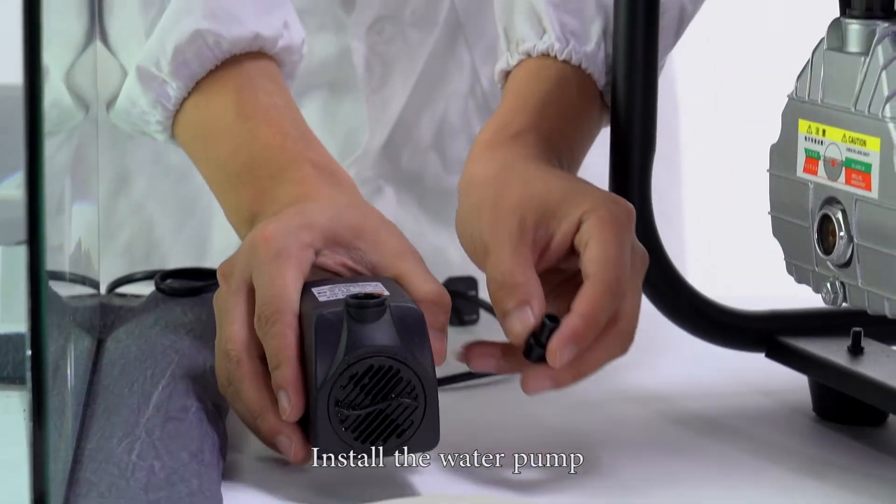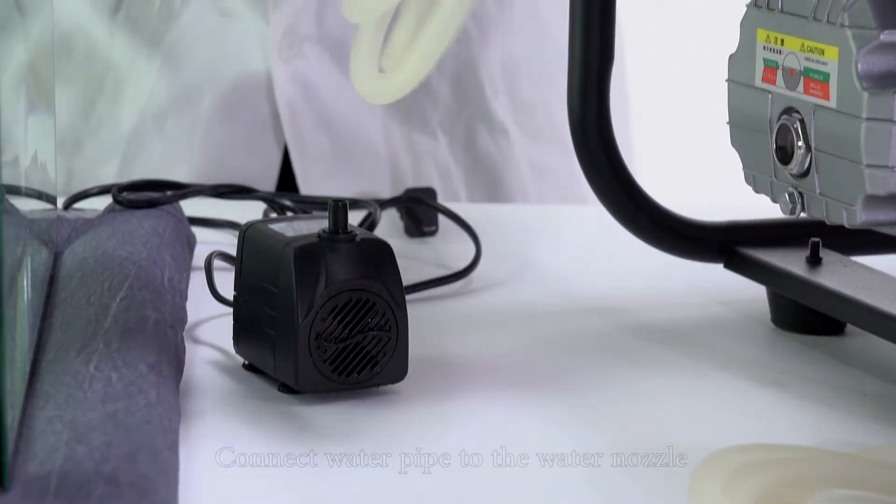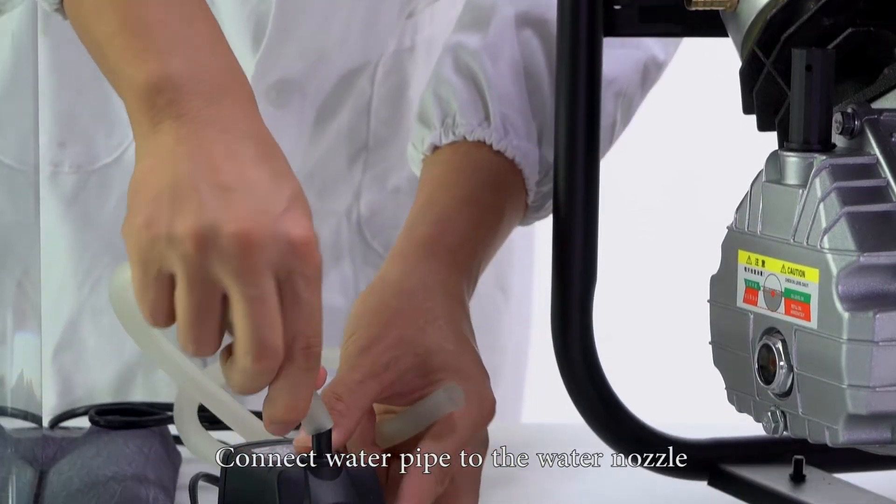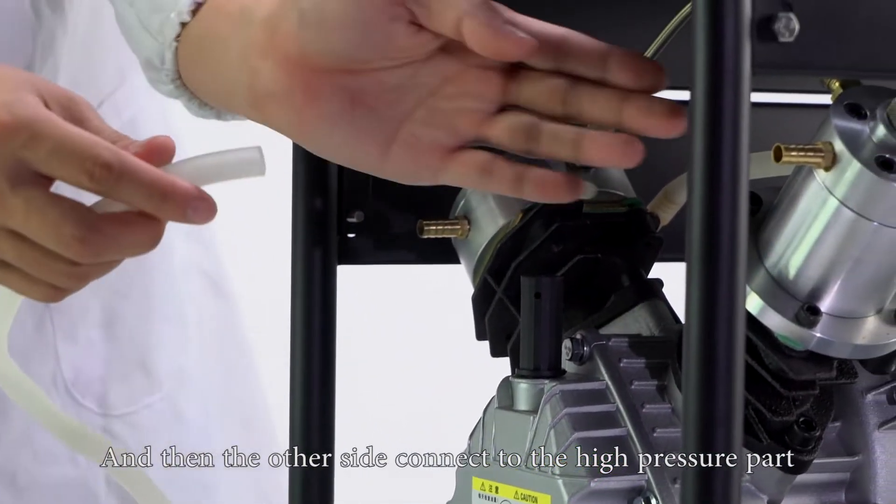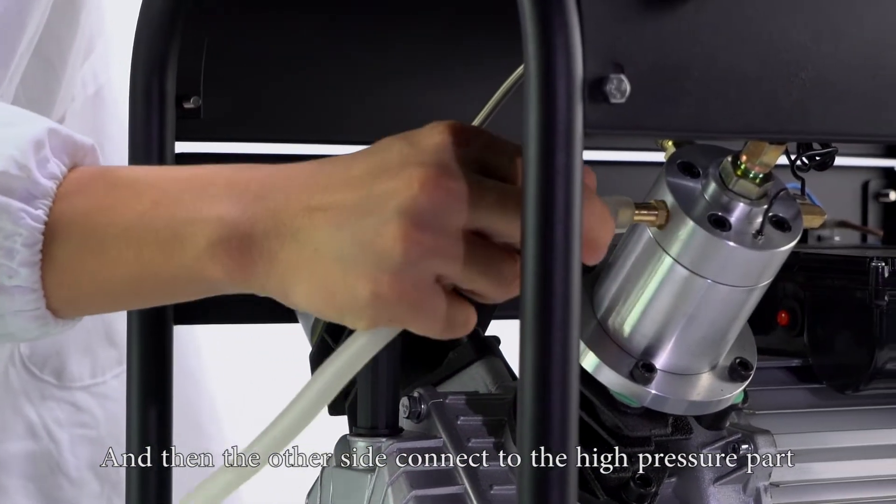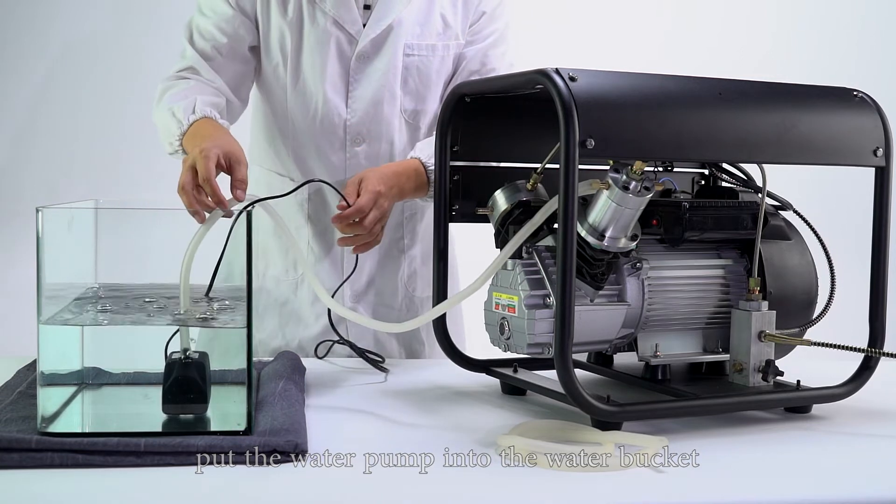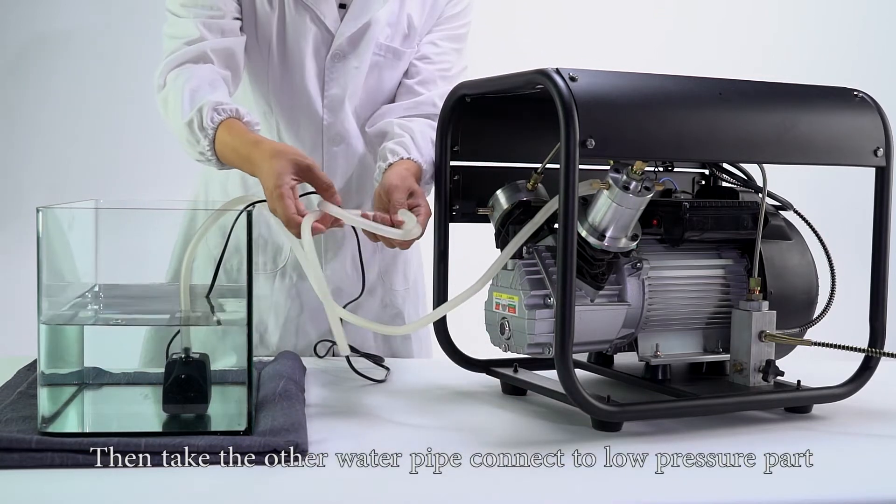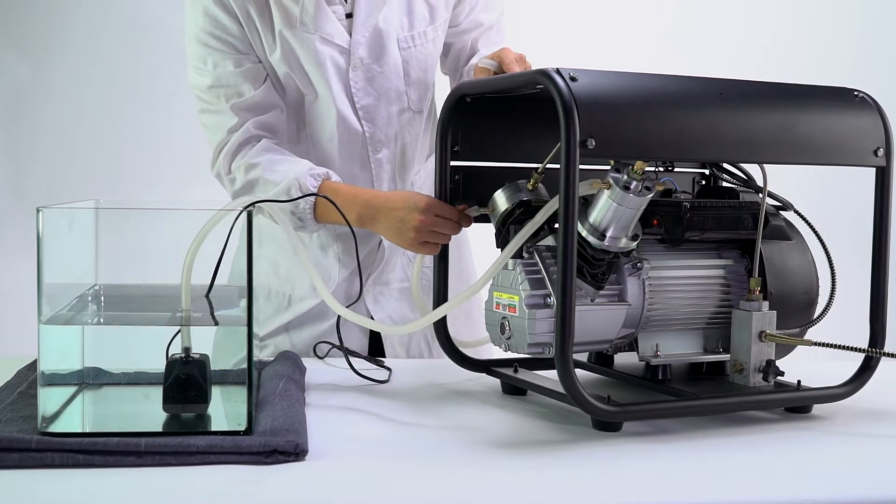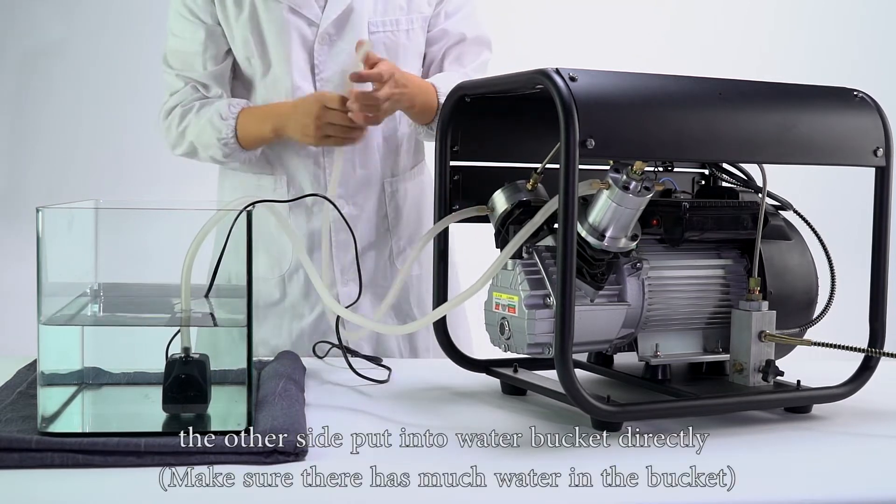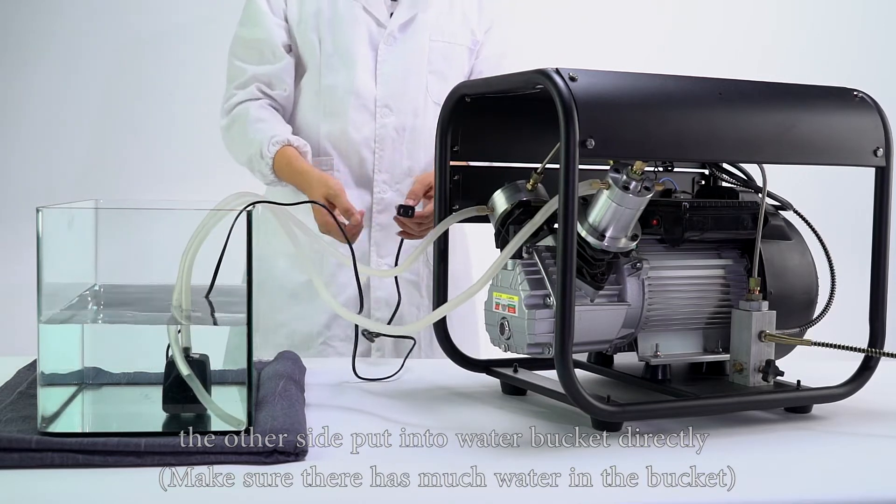Install the water pump. Connect the water nozzle to the water pump, connect the water pipe to the water nozzle, and connect the other side to the high pressure part. Put the water pump into the water bucket, then take the other water pipe and connect it to the low pressure part. Put the other side into the water bucket directly. Make sure there is enough water in the bucket.